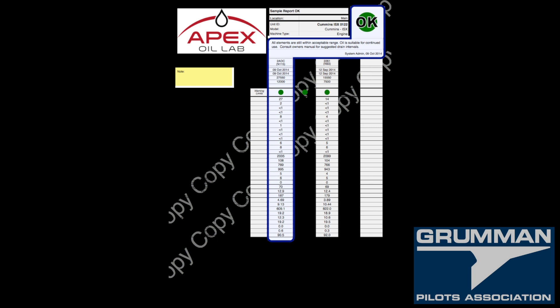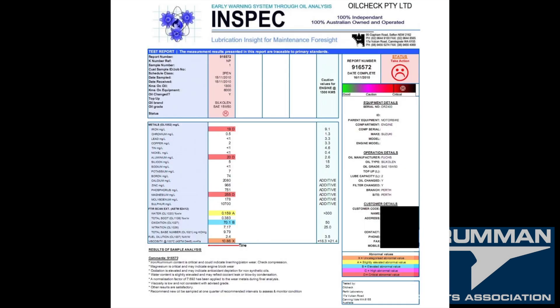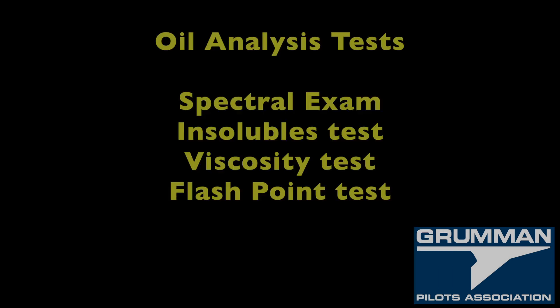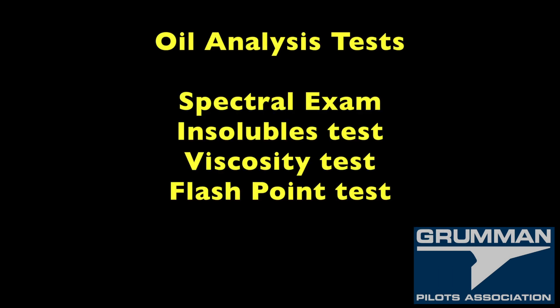There are a lot of different labs you can use for oil analysis — pick one you like. We use Blackstone and buy a lot of their kits, but you can use whoever you want. Included in your oil analysis, they break it down into four tests. The first is the spectral analysis test using a spectrometer, which looks for little pieces floating in the oil that are too small to fall out and go into the filter.